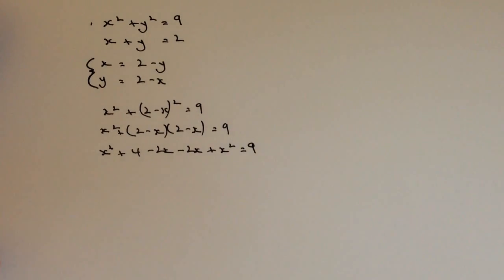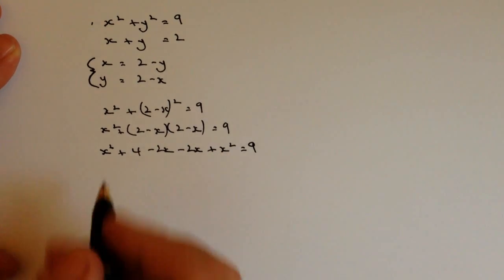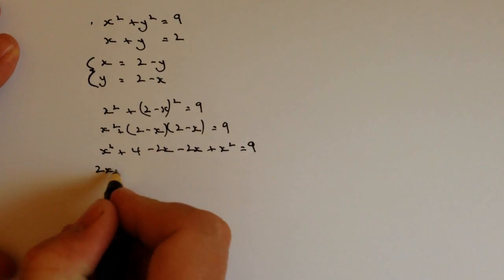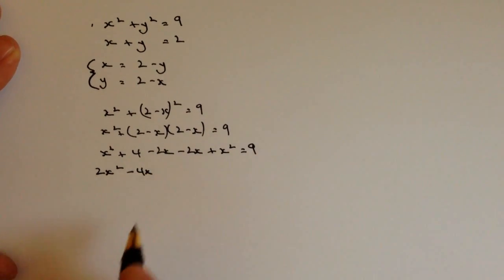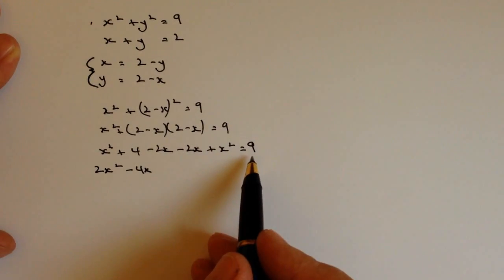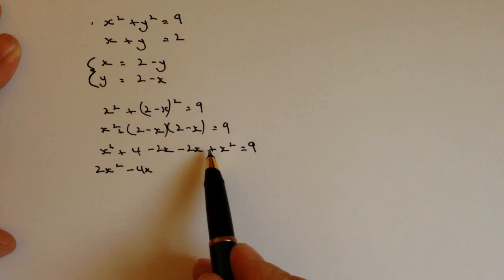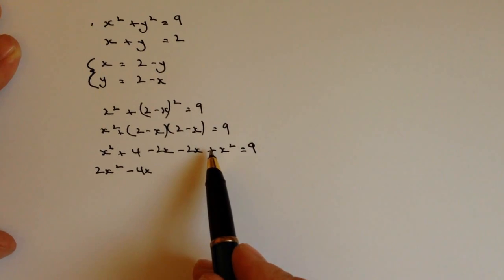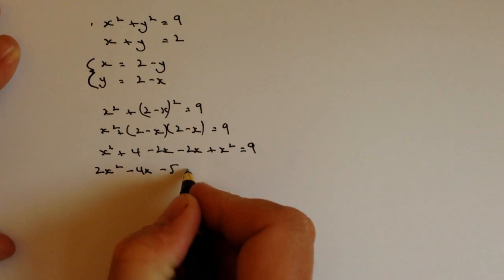Then I'm just going to really tidy this up and just gather up the like terms. So I've got x squared plus x squared. So that's going to give me 2x squared. And then I've got minus 2x minus 2x is minus 4x. And then I've got plus 4 and equal to 9. The thing about solving a quadratic is that you need to make sure that it's equal to 0. So what we're going to do is I'm going to bring that 9 over to this side, which will become then minus 9. So I've got plus 4 minus 9 will give me minus 5, and that's going to be equal to 0.